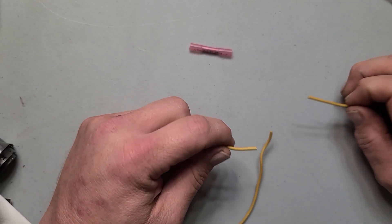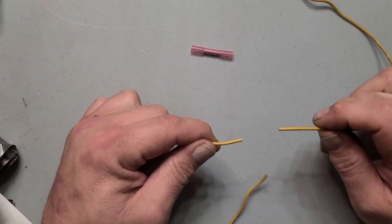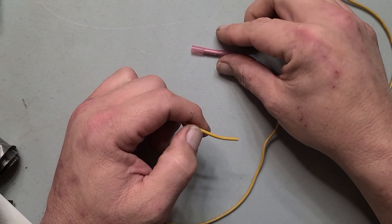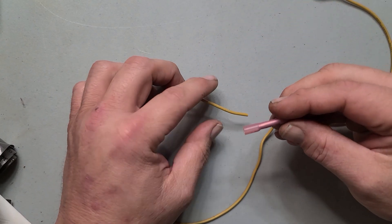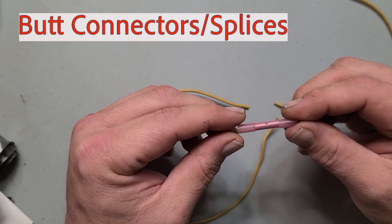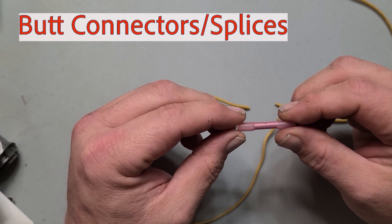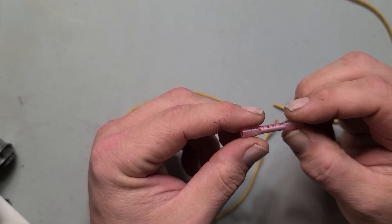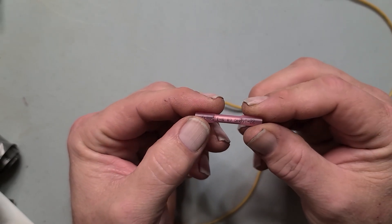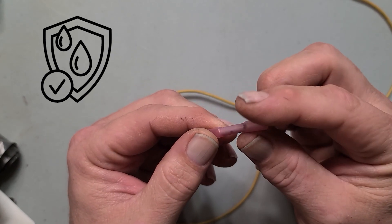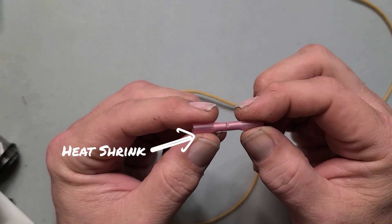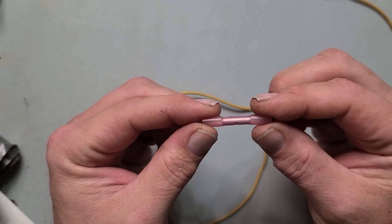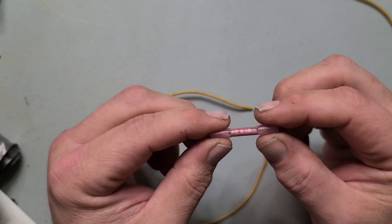All right got a couple of wires here that I'm going to use to represent a broken wire on your car and this is the current best repair that the auto manufacturers want us to be using. This is a butt connector but this has a built-in weather protection so basically heat shrink on the ends here that seal out moisture.